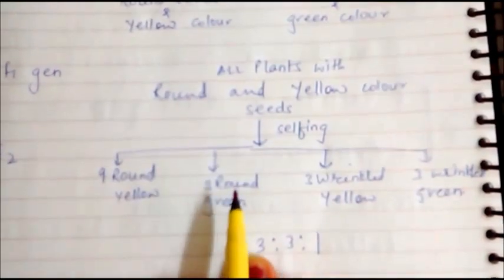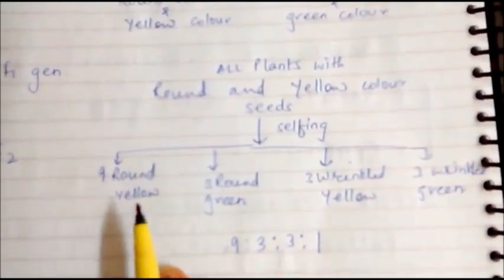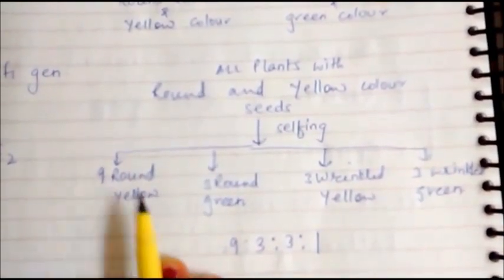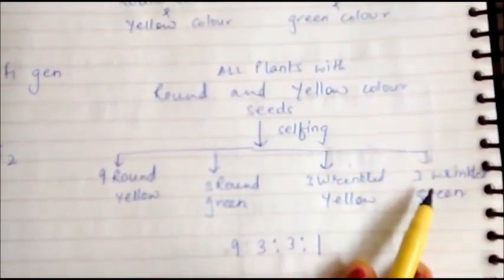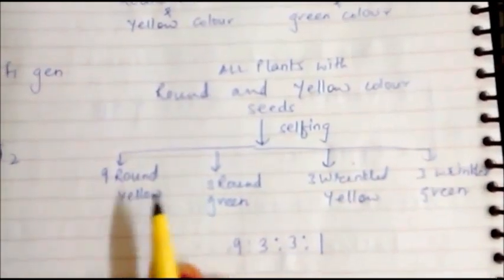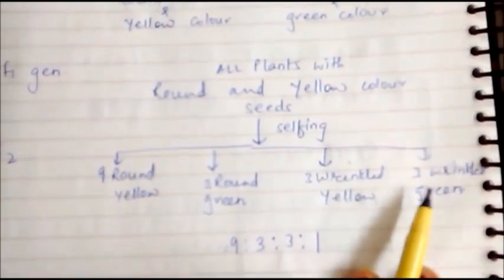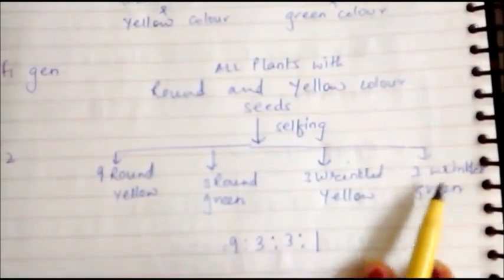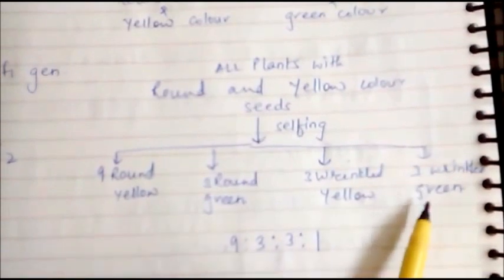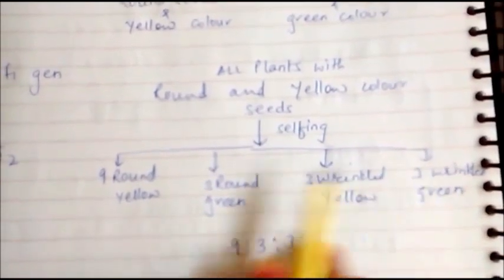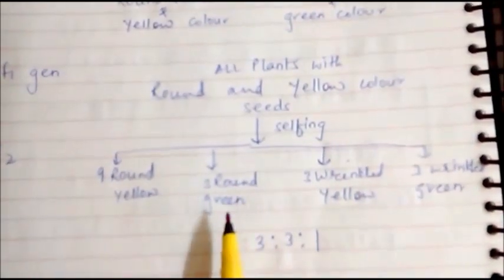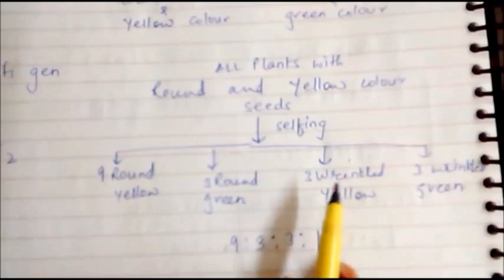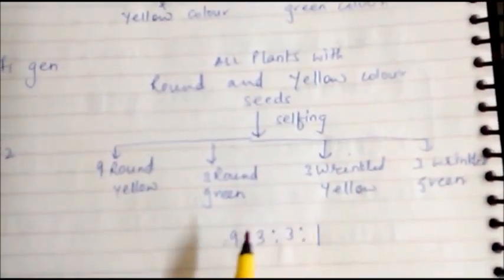Of these, nine round yellow are dominant, one wrinkled green is purely recessive, and the three round green and three wrinkled yellow are recombinants. This gives the classic dihybrid F2 ratio of 9:3:3:1.